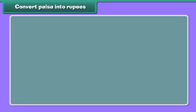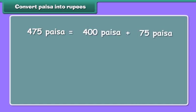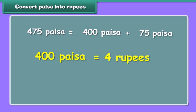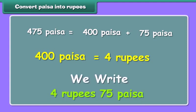It's time to convert paisa into rupees. 475 paisa is equal to 400 paisa plus 75 paisa. As we know, 400 paisa is equal to 4 rupees. Therefore, we can write it as 4 rupees and 75 paisa.